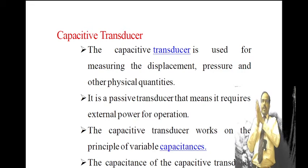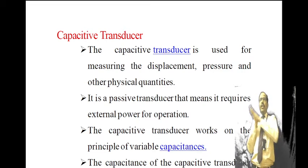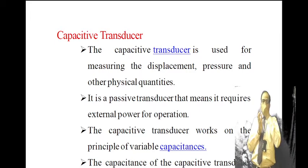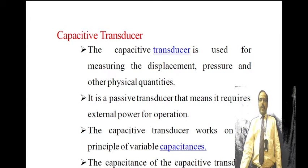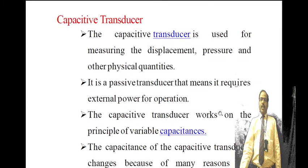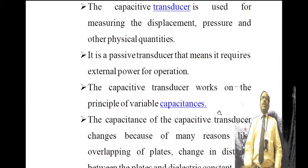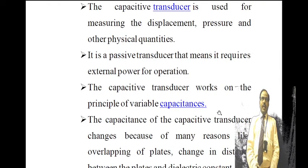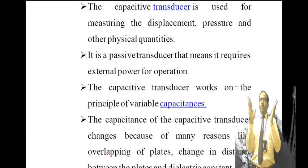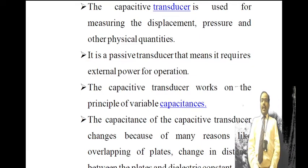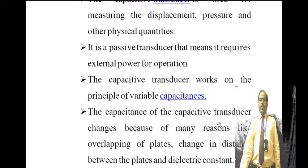These transducers work on the principle of variable capacitance — as some physical quantity changes, there is a corresponding change in capacitance. The capacitance of a capacitive transducer changes because of: the overlapping area between the two plates, the distance between the two plates, and the change in dielectric constant between the two plates.